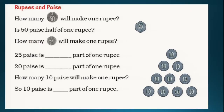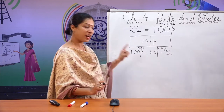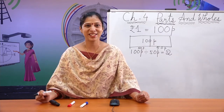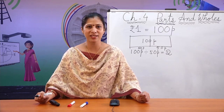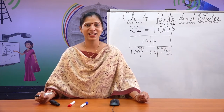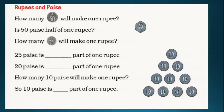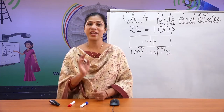Now we have to find out how many 20 paise coins are there in 1 rupee. Again, just divide 100 paise by 20 paise. 100 divided by 20 equals 5. So there are 5 twenty-paise coins in 1 rupee. Similarly, how many 10 paise coins in 1 rupee? 100 divided by 10 equals 10. So there are 10 ten-paise coins in 1 rupee.